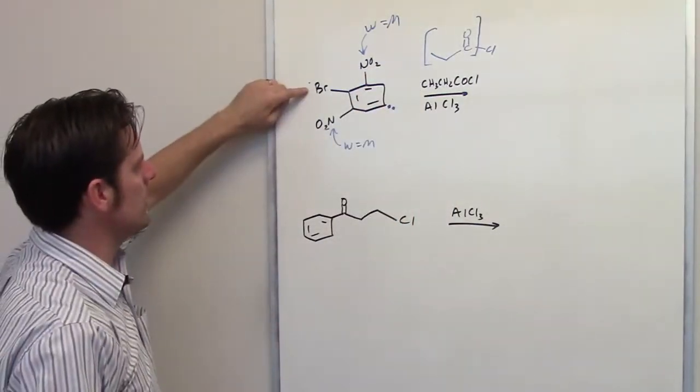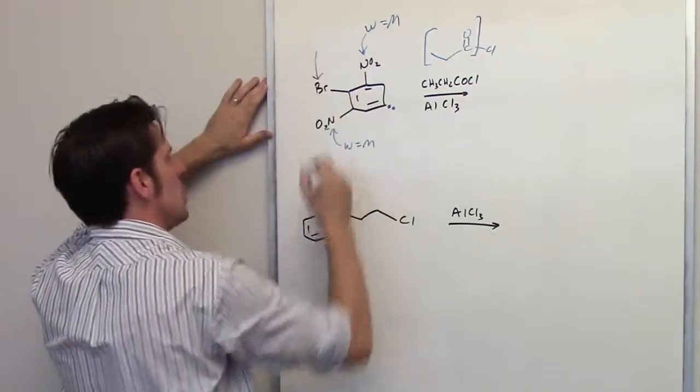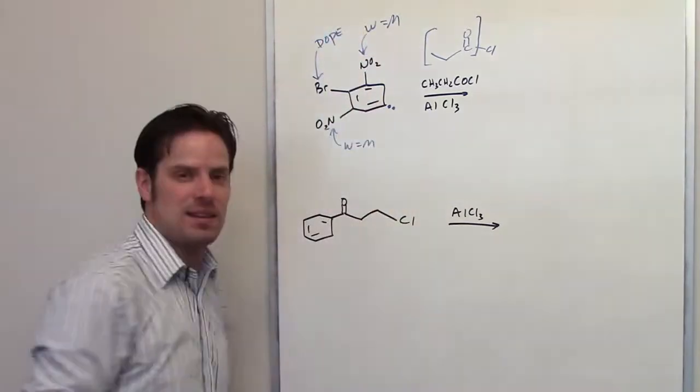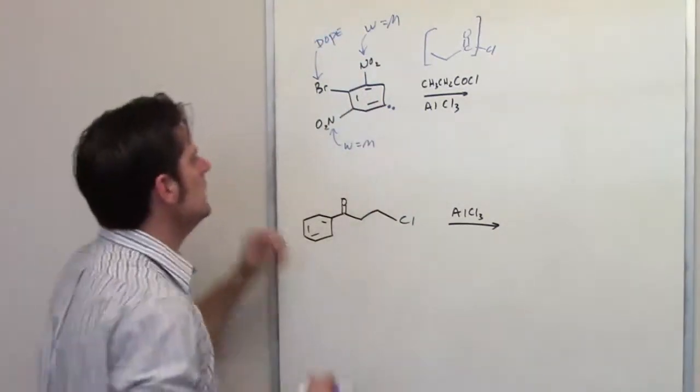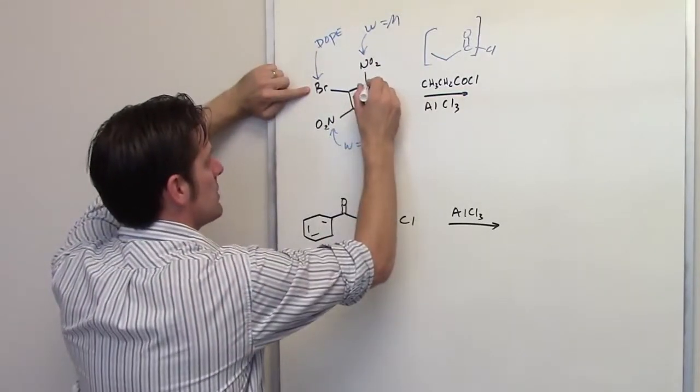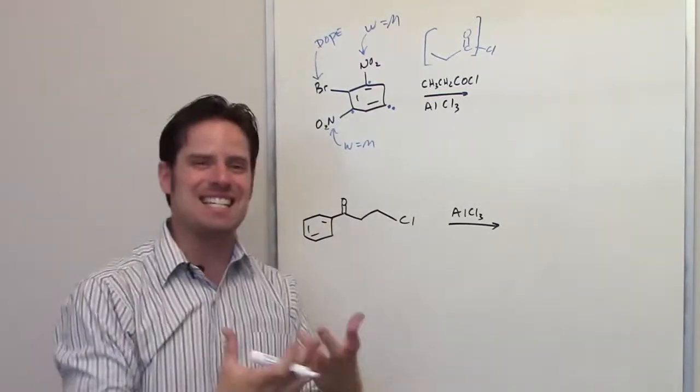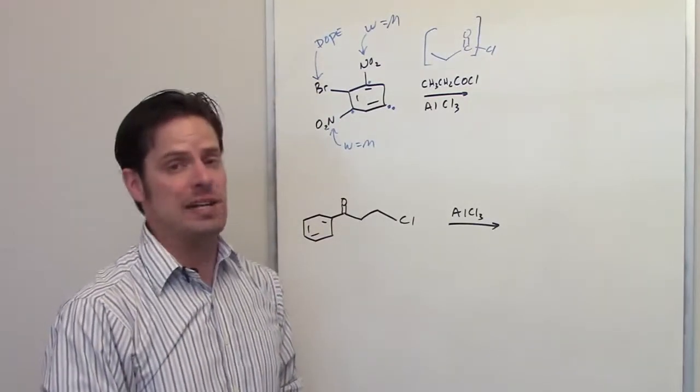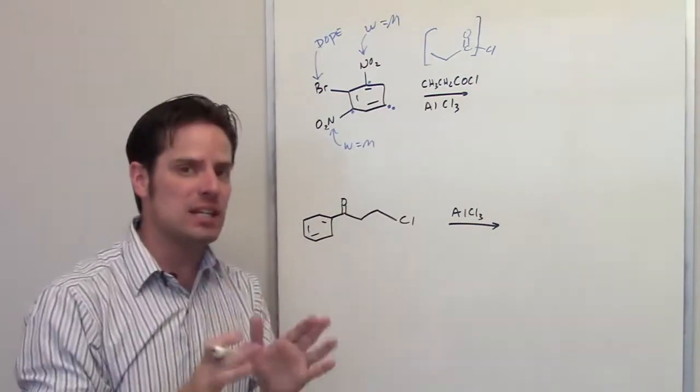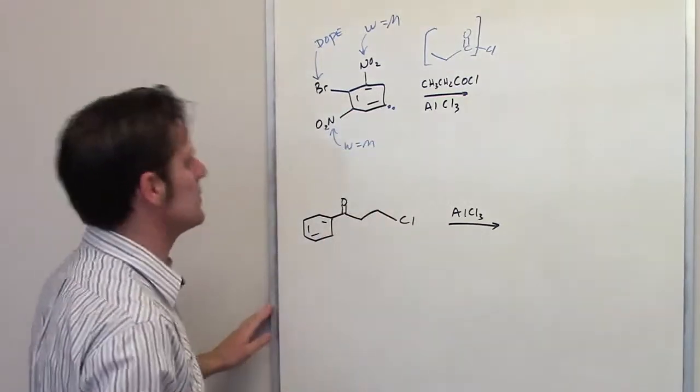Now, what about this bromine right here? What kind of group is it? Well, bromine you should recognize as a donor. It's a weak donor, but it still is a donor, so we remember the mnemonic DOPE. Donors make things go ortho and para. Now, ignoring the nitros, what are the ortho positions relative to this bromine? Well, they are, of course, these positions right here where the nitros are attached. Can the bromine make anything attach to those positions? Absolutely not, because they're already occupied by nitro groups.